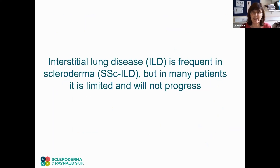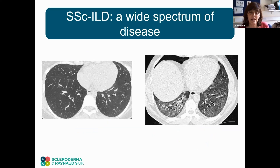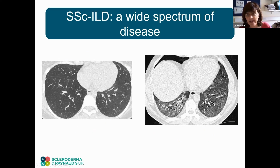Interstitial lung disease is frequent in scleroderma, but in many patients it is only limited and will not progress. As you can see here with these two examples: on the left, we have an essentially normal lung of a patient with scleroderma; on the right, we have a patient with extensive disease.